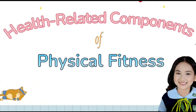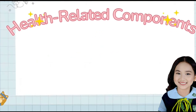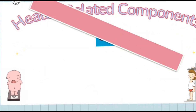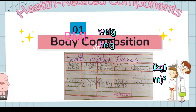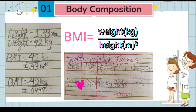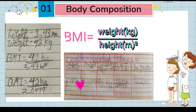Health-related components of physical fitness. 1. Body composition. It is the amount of fat in the body compared to the body mass. We evaluate your body composition by measuring your height and weight, or body mass index (BMI). It is a measurement tool that can indicate whether you are underweight or overweight for your height.